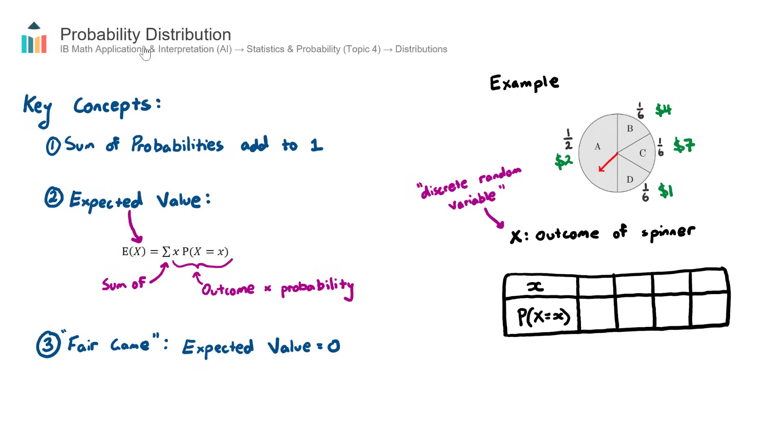In this video, we look at probability distribution, which is part of the AI course under topic four, statistics and probability, under the subtopic of distributions.